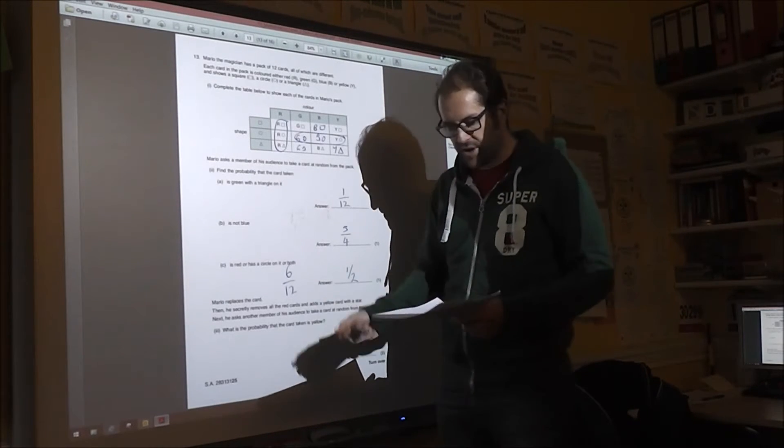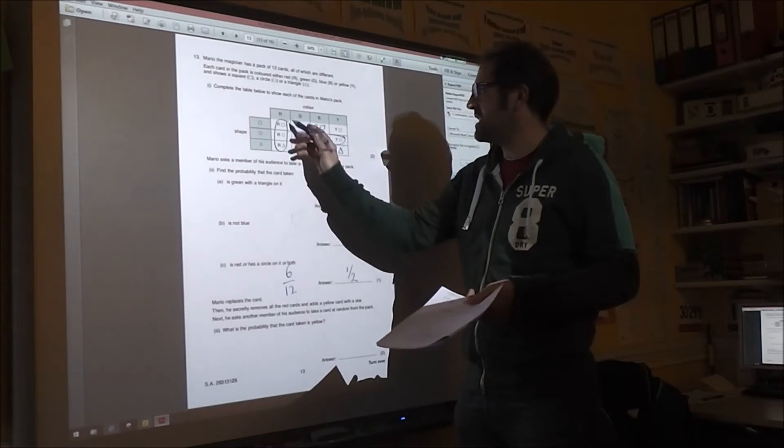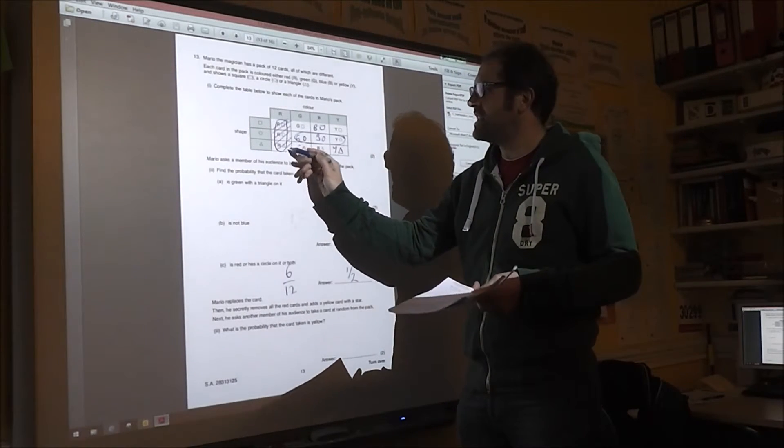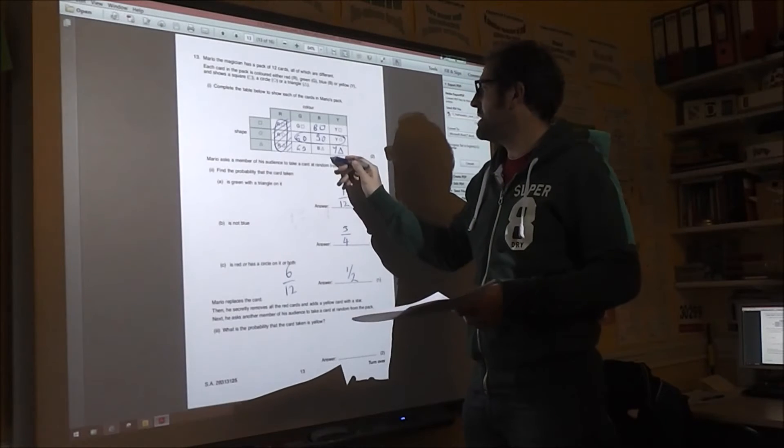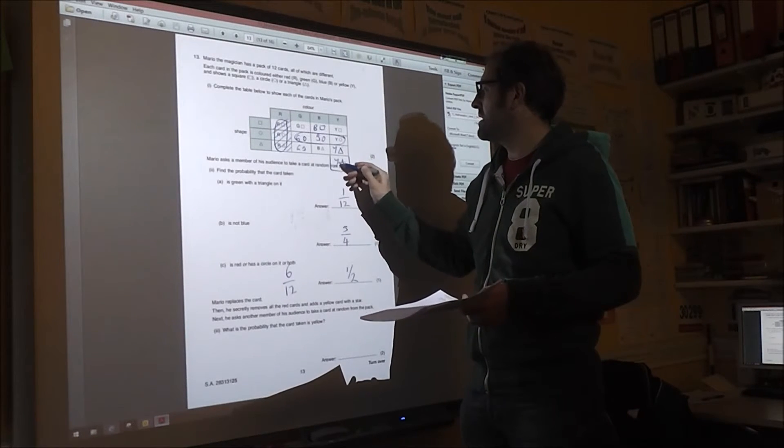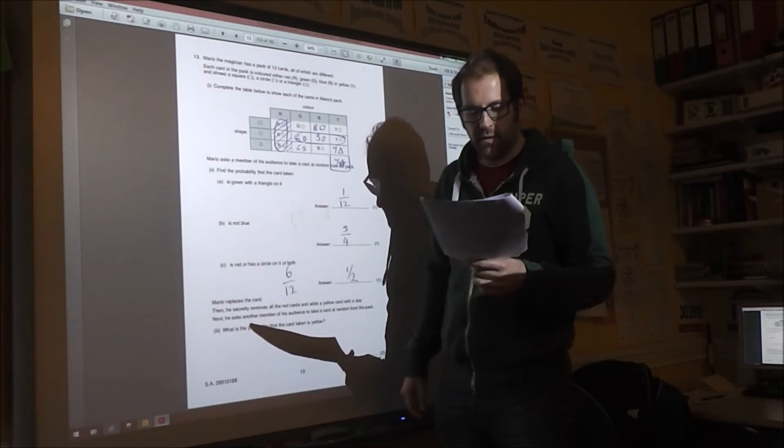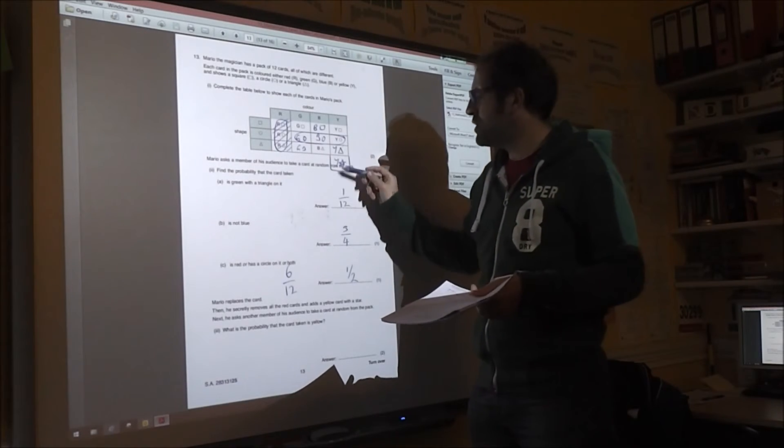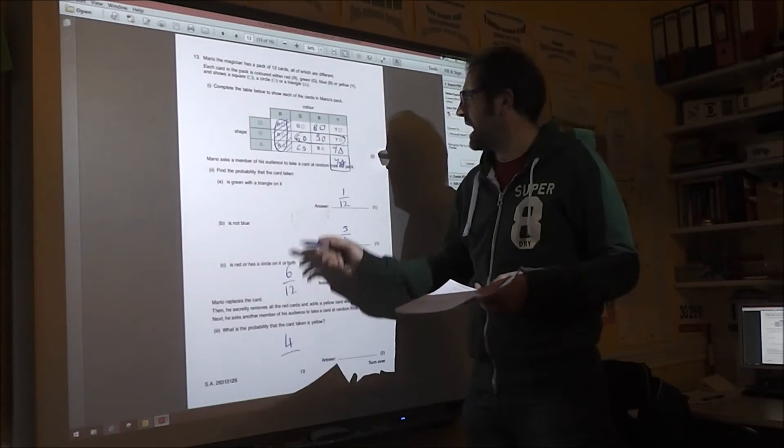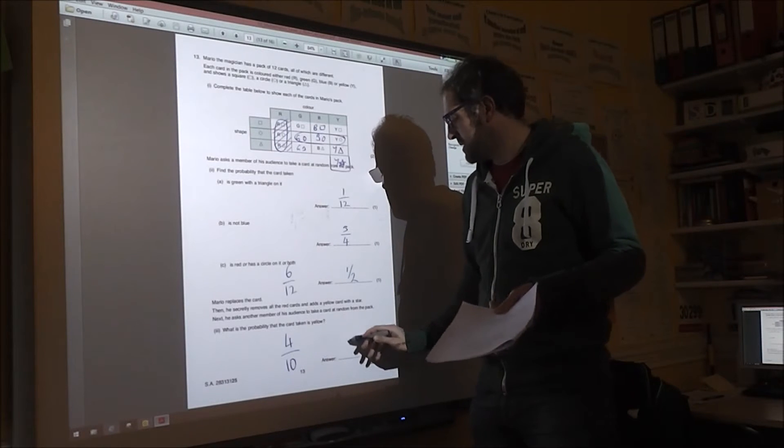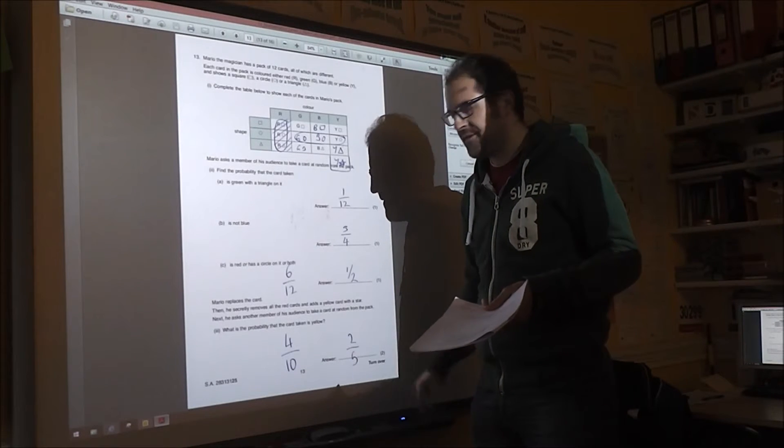So Mario then puts back the card. He then removes all the red cards. So they're out of the equation now. And puts in a yellow star. Now what's the probability it's yellow. There are now four yellow ones out of a total of ten, which simplifies to two fifths.